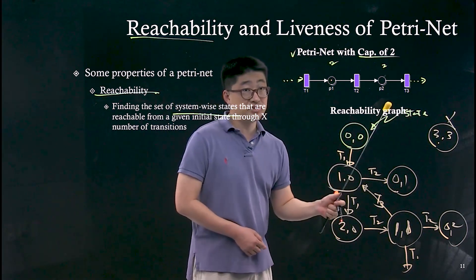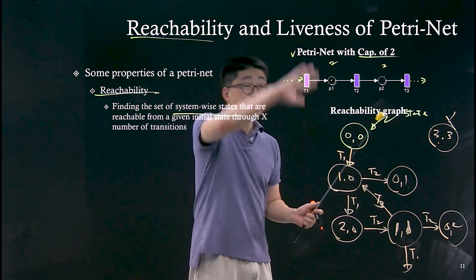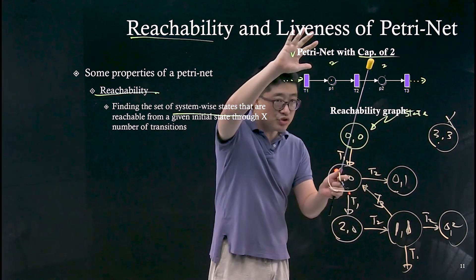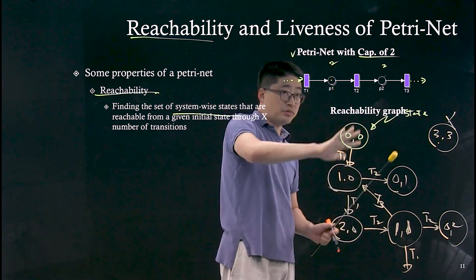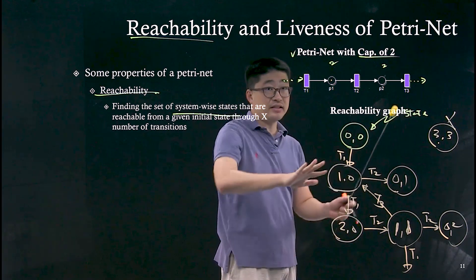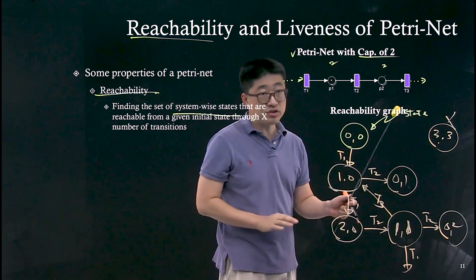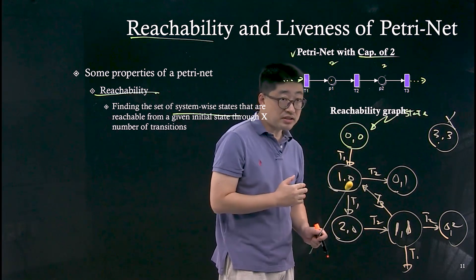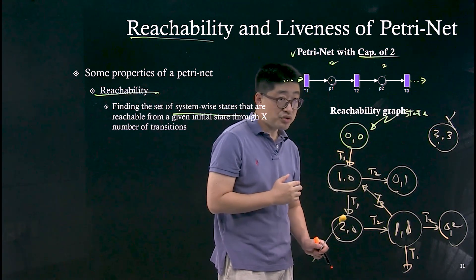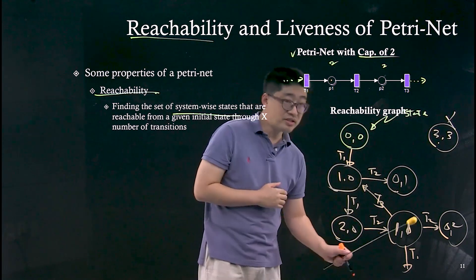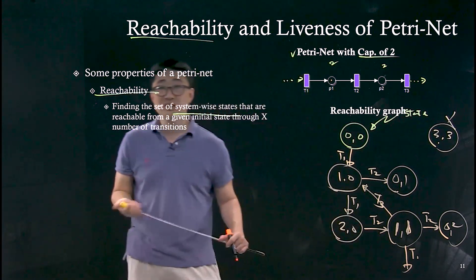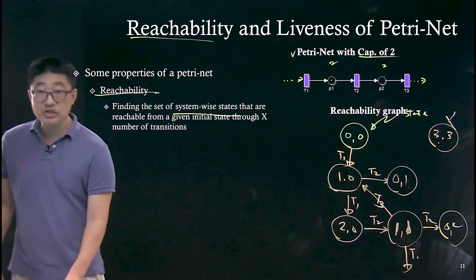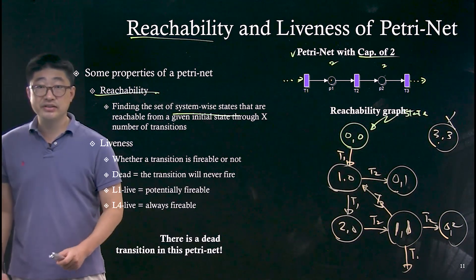The reachability graph is different from the Petri net itself, but it can be generated from the Petri net. It has a graph structure with states and transitions alternating: state, transition, state, transition, state. That is the reachability analysis.